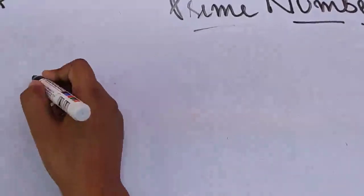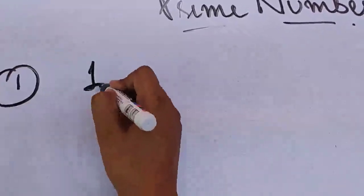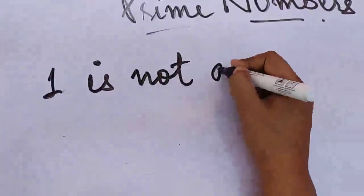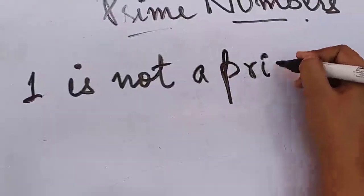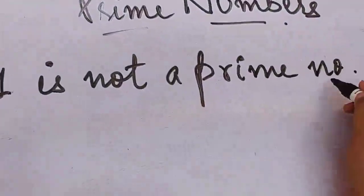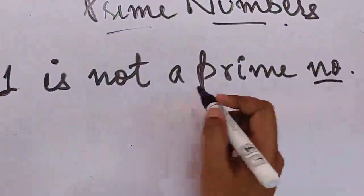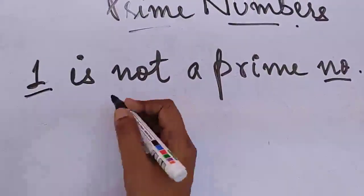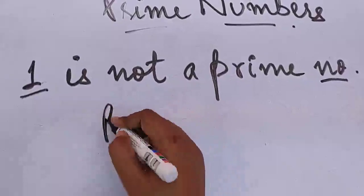What are those points? If we talk about the first point, then 1 is not a prime number. I'm using short form, meaning number. 1 is not a prime number. This means 1 is not a prime number because for prime numbers we need how many factors?